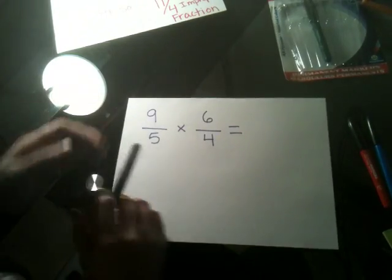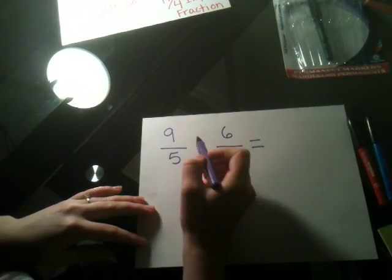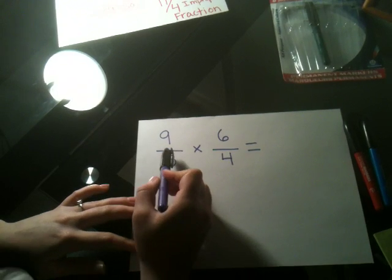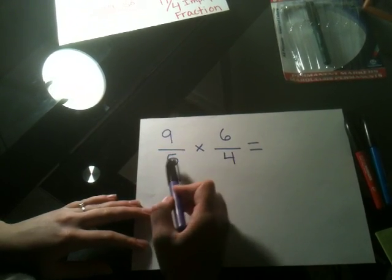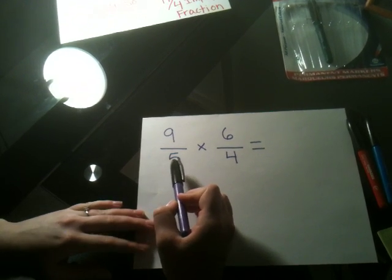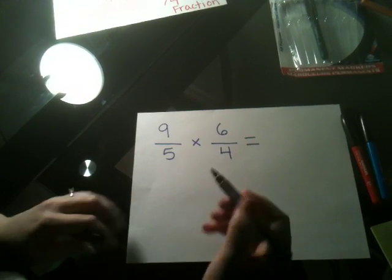All you need to remember when multiplying improper fractions is to multiply straight across. All we do is multiply the numerator, the top numbers, by each other, and then multiply the denominator, the bottom numbers, by each other.